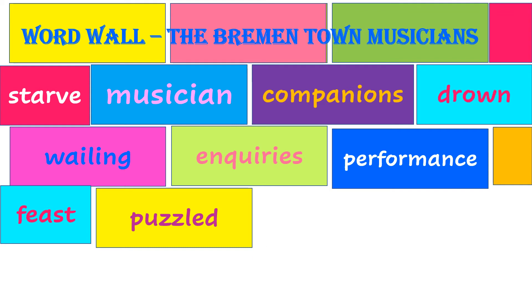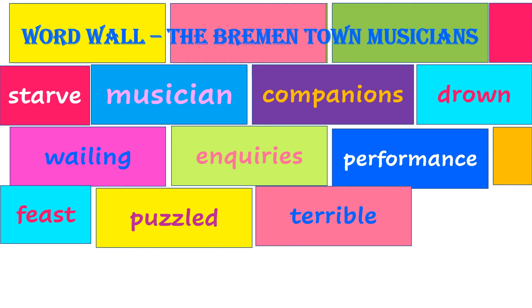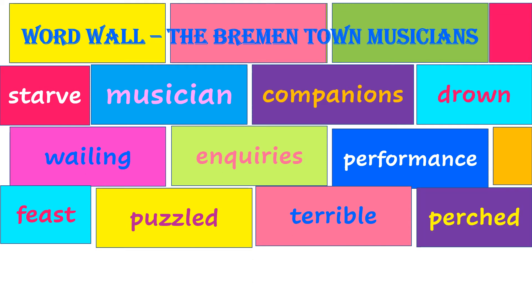Puzzled means confused. Terrible means very bad. Perched — sitting on top of something is called perched.